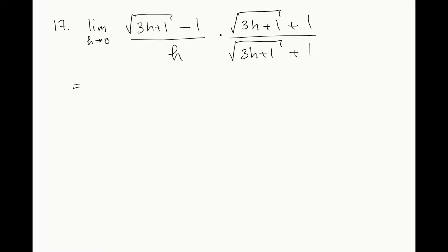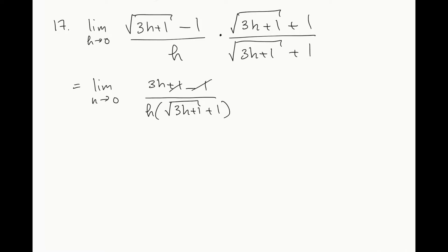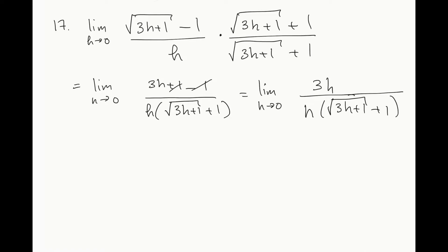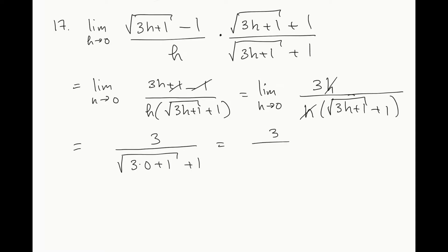This is going to be equal to the limit as h goes to 0 of (sqrt(3h plus 1) minus 1)(sqrt(3h plus 1) plus 1) divided by h times (sqrt(3h plus 1) plus 1). Notice that the ones cancel out, and we have the limit as h goes to 0 of 3h divided by h. Now we have a common factor h in numerator and denominator, so they cancel out. Substituting in, we get 3 divided by (sqrt(3 times 0 plus 1) plus 1), which is 3 over 2.